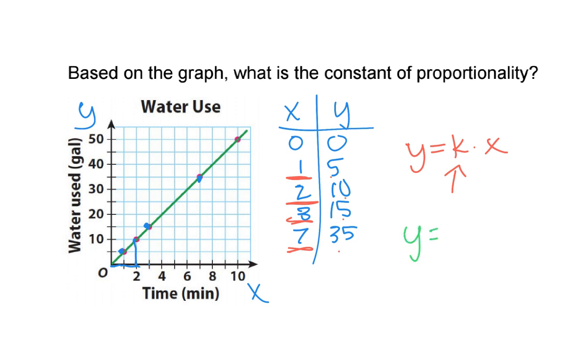So y equals five times x, and my constant of proportionality — my k value — is five in this case.